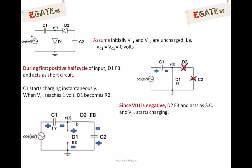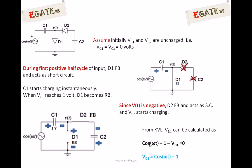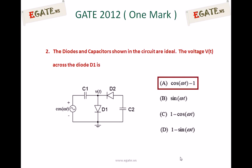With D2 forward biased, it acts as a short circuit and capacitor C2 starts charging with polarity as indicated by the current flow direction. To find V(t), we apply KVL across the loop containing cos(ωt), C1, and D1: cos(ωt) − 1 − V_D1 = 0. Therefore, V_D1 = cos(ωt) − 1, which is the required V(t). So for the given question, the right answer is cos(ωt) − 1.